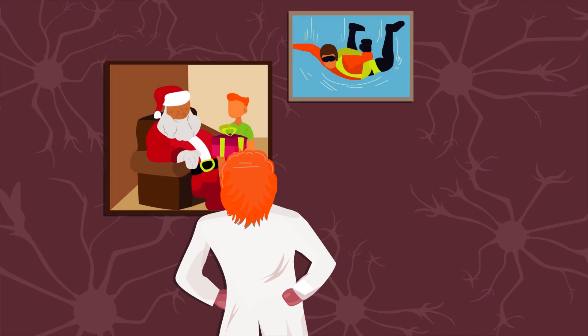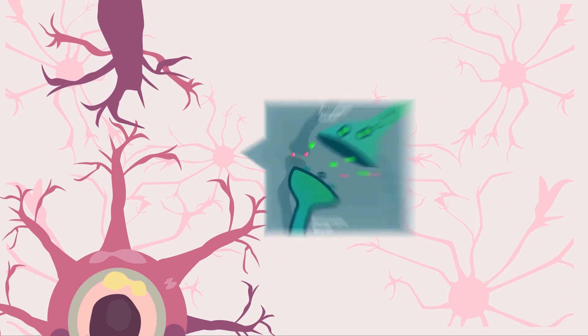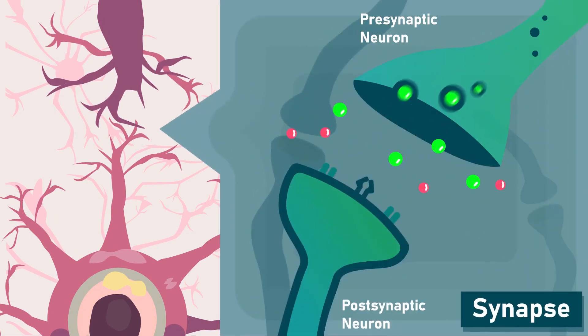But still, that doesn't answer the question of how memories are created, and this brings us to synapses. A synapse is a small gap between neurons, responsible for their communication. The strength of a synapse is an essential factor for the efficiency of the communication.